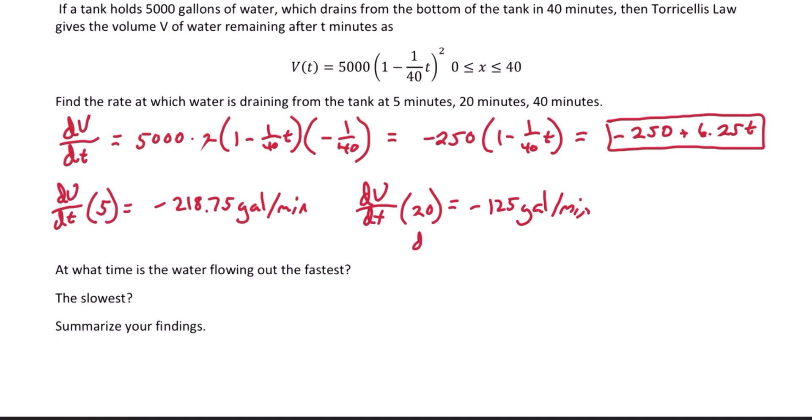And then dV/dt evaluated at 40 minutes. Plug in 40, and we get 0 gallons per minute, which makes sense because after 40 minutes, the tank has completely drained.